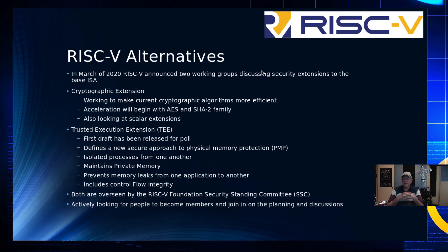So what are the alternatives? As of March 2020, RISC-V announced two working groups discussing security extensions to their base ISAs — their specifications for both privileged and unprivileged execution on their chipsets, which they are designing as open source. Somebody asked me recently: why do we need open source CPUs? Look back at the slides in this video — that's why. You need many eyeballs looking at this. If you're not putting the time and effort into making sure your security offerings are good, you're going to have repeated breakage like Intel is suffering through right now.